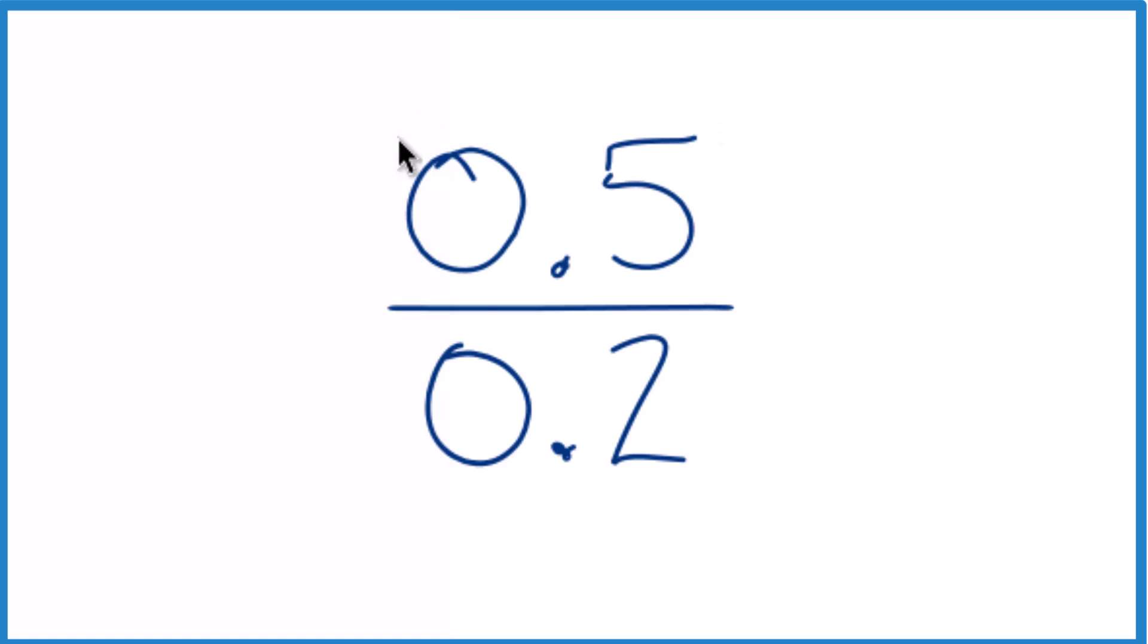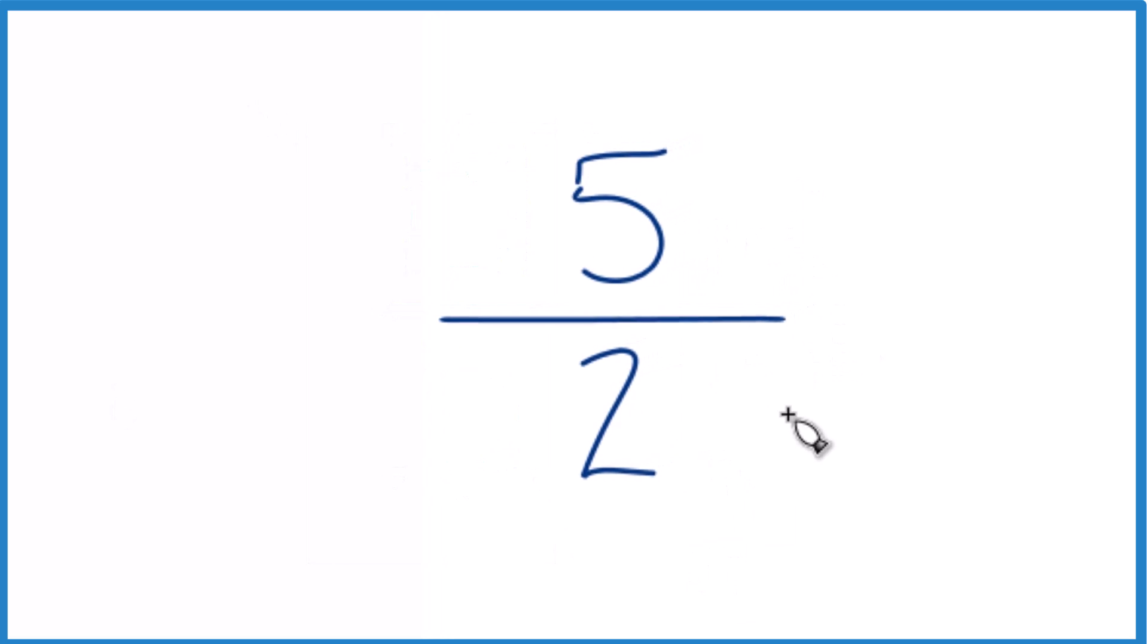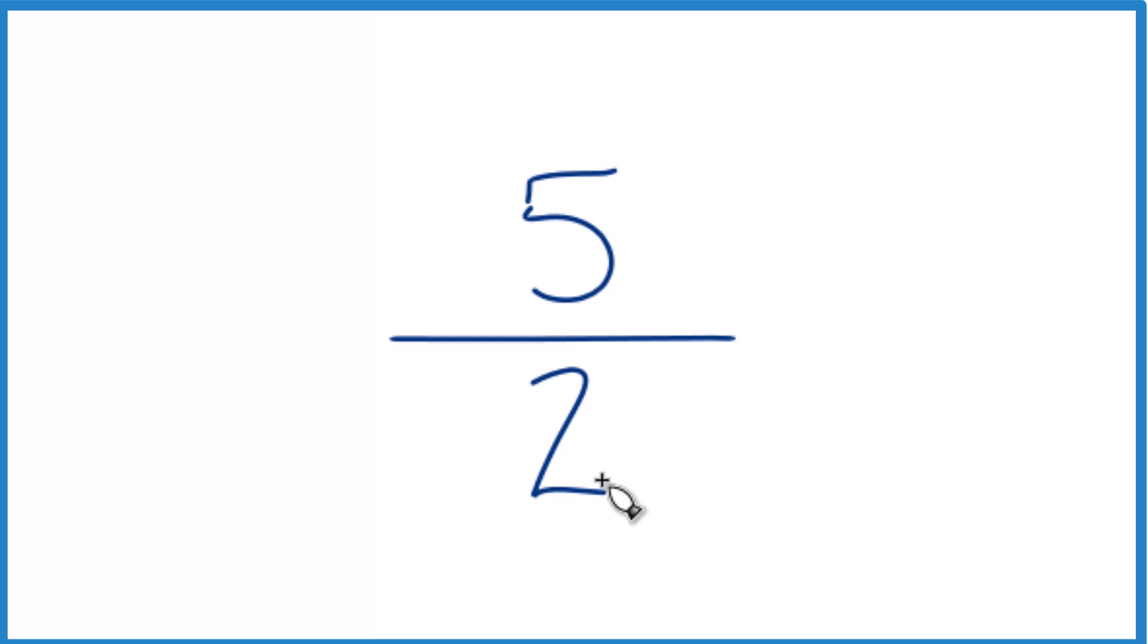Then what we can do, as long as we do it to the numerator and the denominator, we can just move this decimal point over here and over here. And now we have 5 divided by 2. Let's get rid of the zeros and the decimal points. And you might know that 5 divided by 2, that would be 2.5.